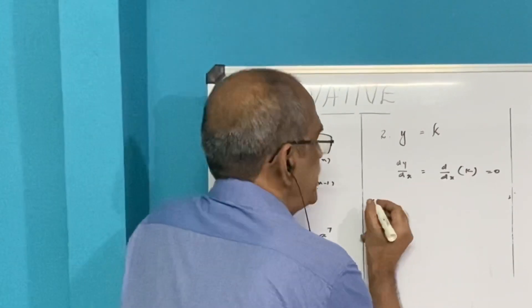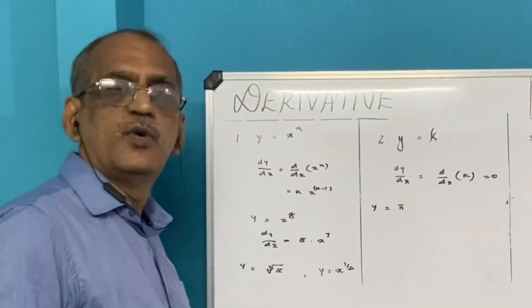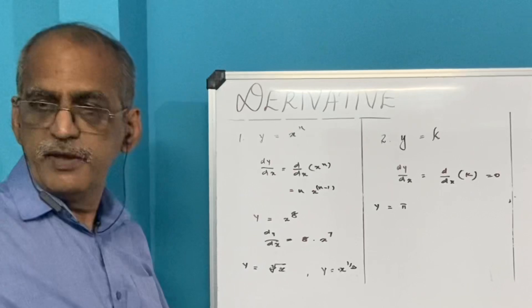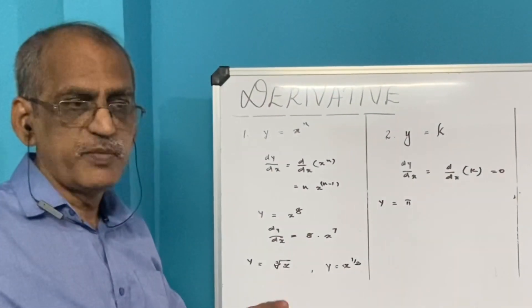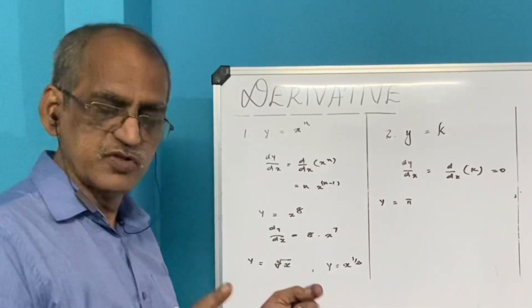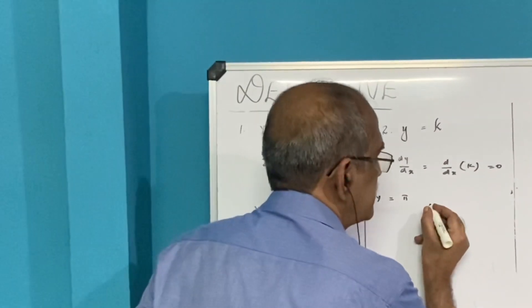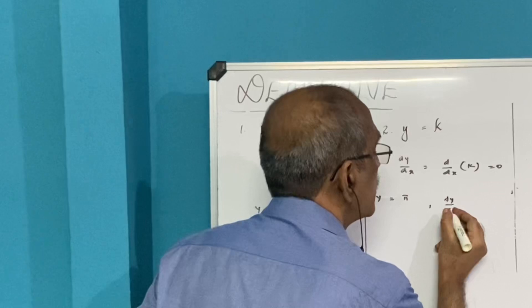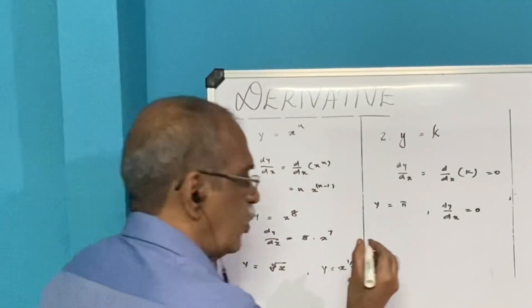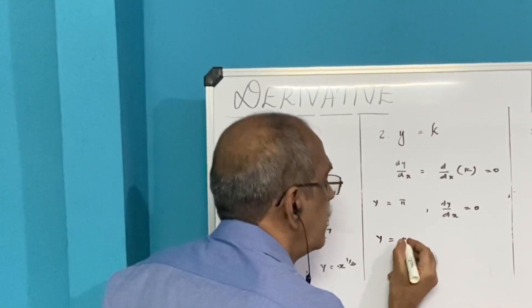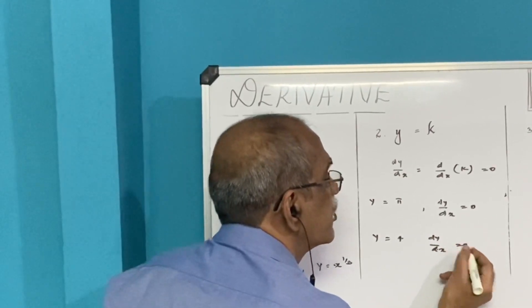Example: if y equals pi, you all know the value of pi is 22/7. Whatever the case, remember 22/7 is a number, 3.14 is also a number, so it is a constant. So here we say that dy/dx is equal to 0. If y equals 4, dy/dx is equal to 0.